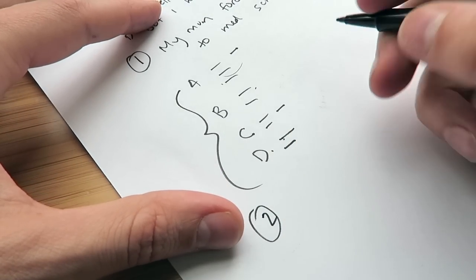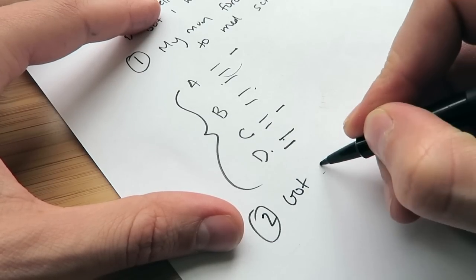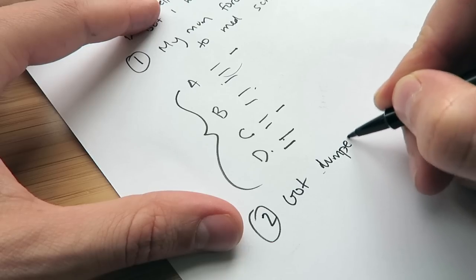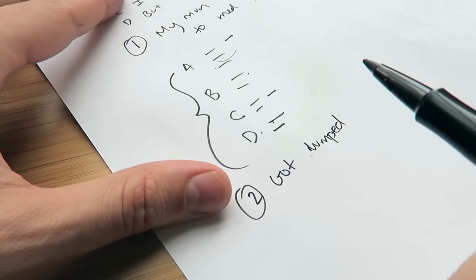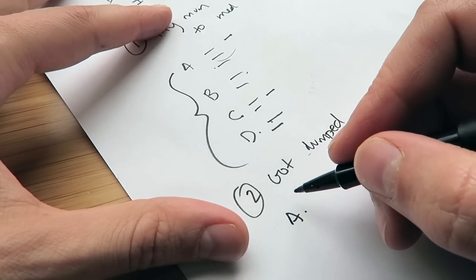So let's go to the second example. You got dumped by your ex and it was someone you really loved. So A is, I feel that. You write out every emotion.